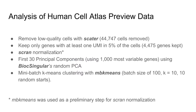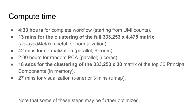I also used mini-batch k-means as a preliminary step for the scran normalization. I ran mini-batch k-means once on the HDF5 matrix and once on the in-memory PCA matrix. The whole thing takes four and a half hours to complete. The bottleneck is PCA at two and a half hours using randomPCA on six cores, while the clustering itself is pretty fast — 13 minutes for the full 300,000 by 4,000 matrix and only 18 seconds on the first 30 PCs.